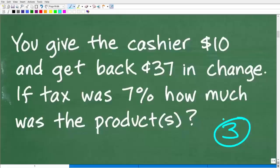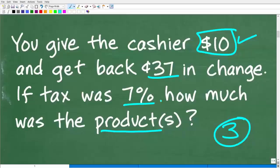But of course, we go to the store, we buy a product or products, and when we go to pay, we have $10, right? So we're going to give the cashier $10, and they're going to give us back $0.37 in change. Now, of course, this total cost includes the sales tax of 7%. So the question is, how much was the product?